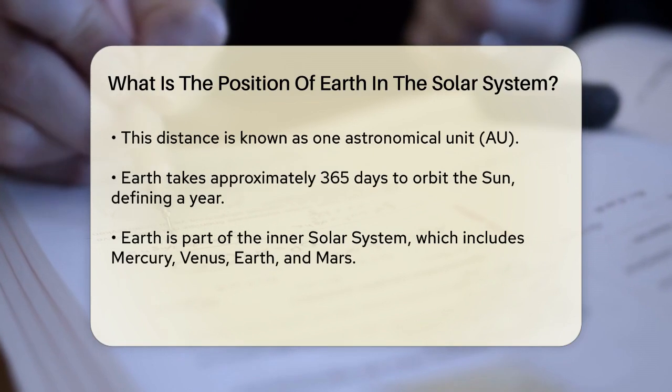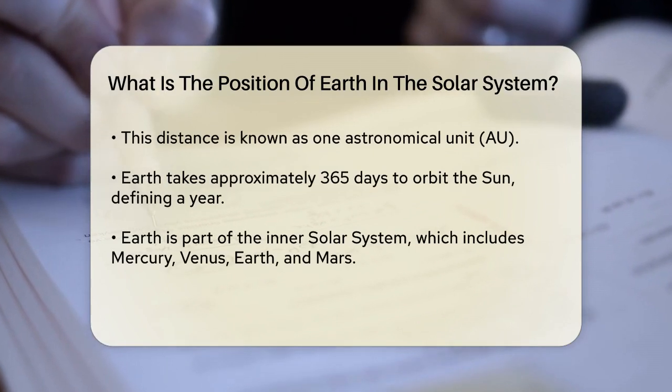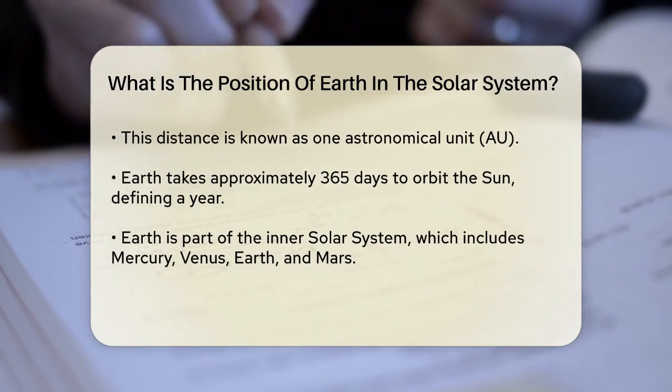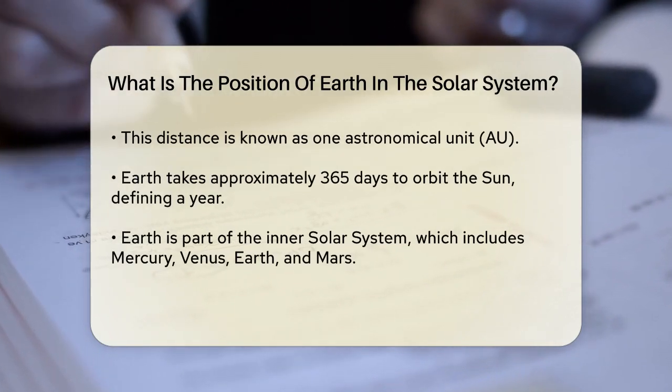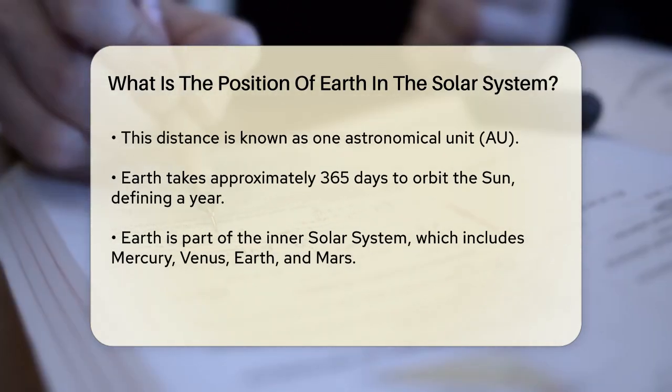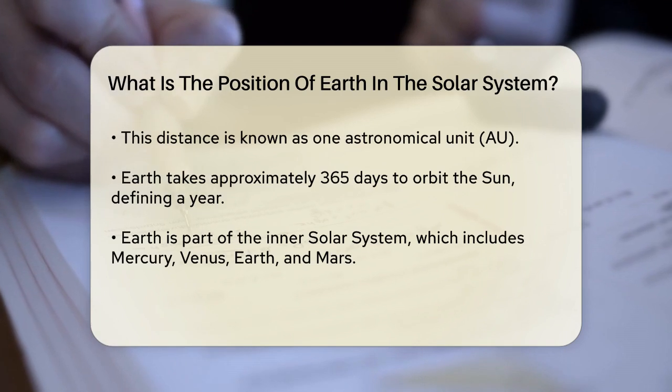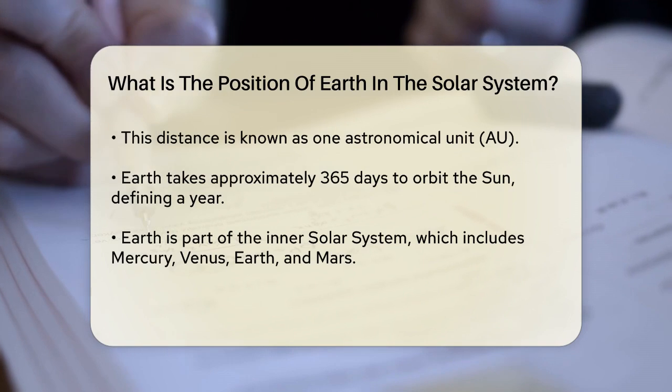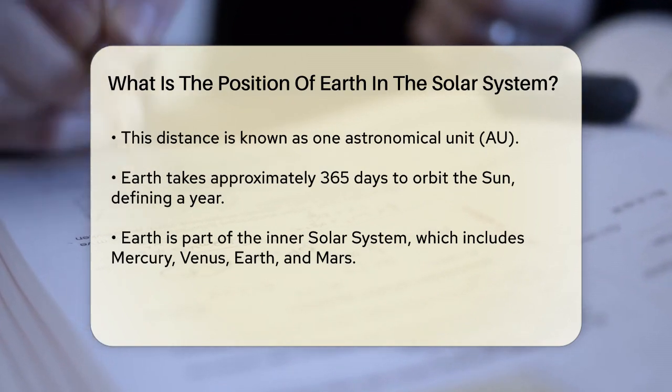Earth orbits the Sun at an average distance of about 93 million miles or 149.6 million kilometers. This distance is often referred to as One Astronomical Unit, or AU. It takes Earth approximately 365 days to complete one full orbit around the Sun, which is what we call a year.